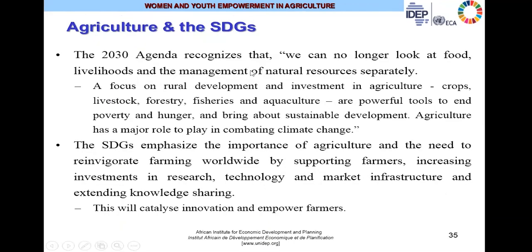The 2030 Agenda recognized that we can no longer look at food and livelihoods and the management of natural resources separately. A focus on rural development and investment in agriculture — whether crops, livestock, forestry, fisheries, and aquaculture — are powerful tools to end poverty and hunger and bring about sustainable development. Agriculture has a major role to play in combating climate change. The SDGs emphasize the importance of agriculture and the need to reinvigorate farming worldwide by supporting farmers, increasing investments in research, technology, and market infrastructure, and extending knowledge sharing. This may catalyze innovation and empower farmers.